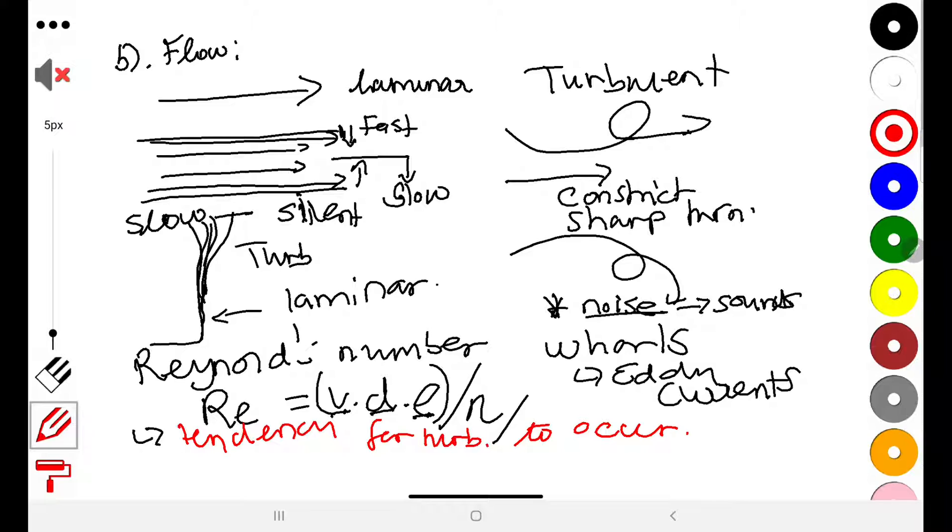So let me go through some of this. The velocity of blood is in centimeters per second, and then we have the diameter in centimeters, and then the density itself as well as the viscosity. Viscosity can be measured in poise.